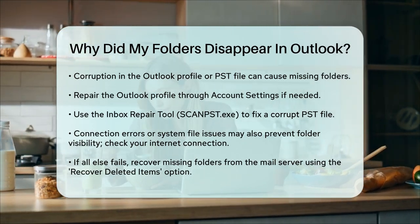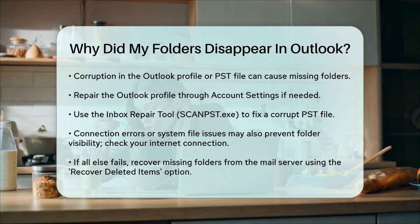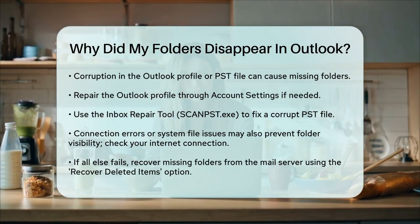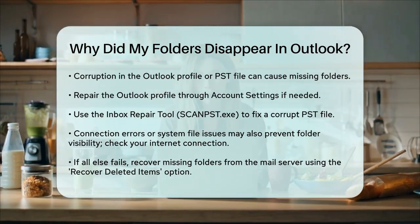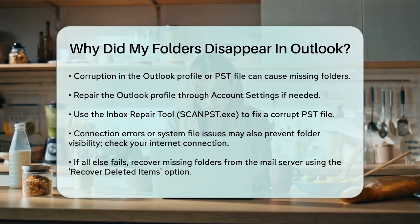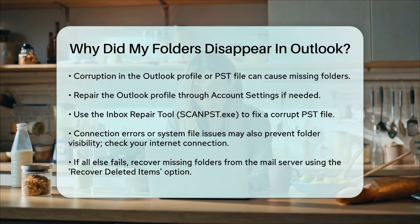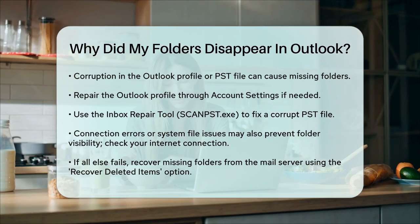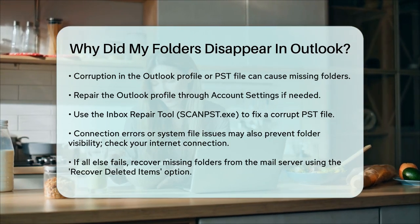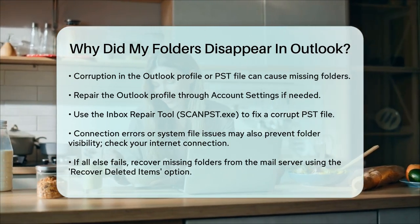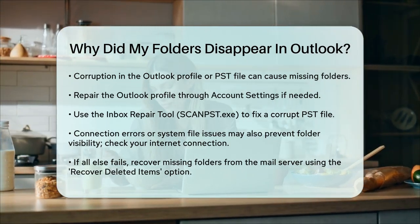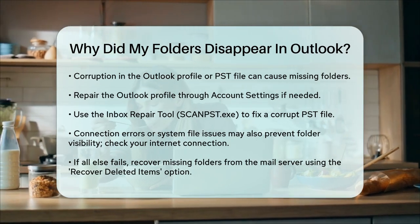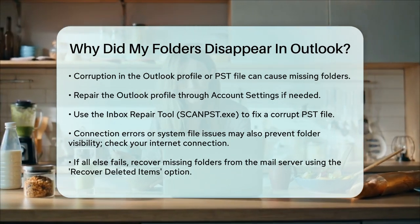Finally, if none of these methods work, you might need to recover the folder from the mail server. In Outlook, go to Folder > Recover Deleted Items, or Home > Recover Deleted Items from Server. Select the missing folder and click Restore Selected Items to recover it. By following these steps, you should be able to find and restore your missing Outlook folders, ensuring you don't lose any important emails or information.